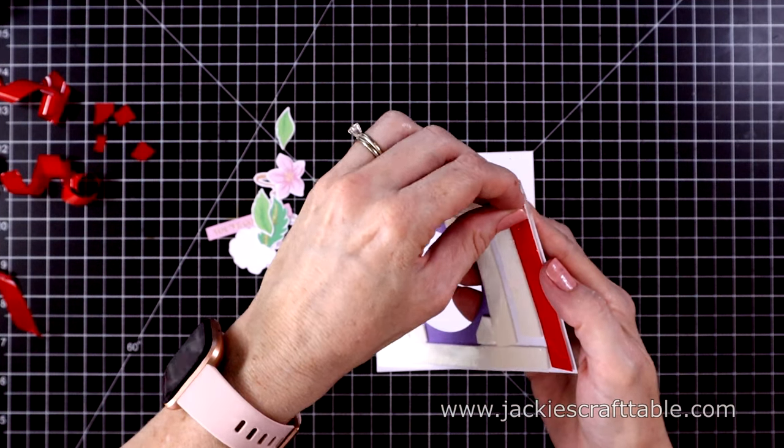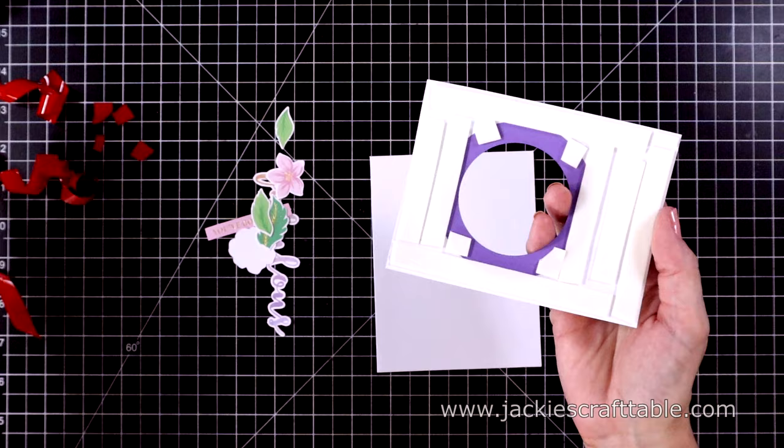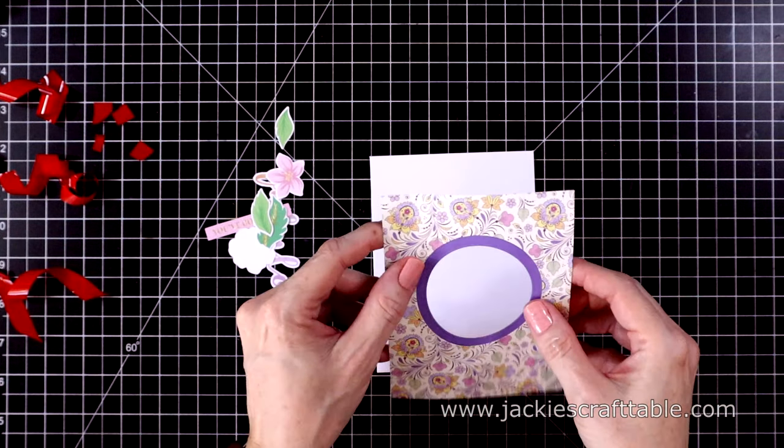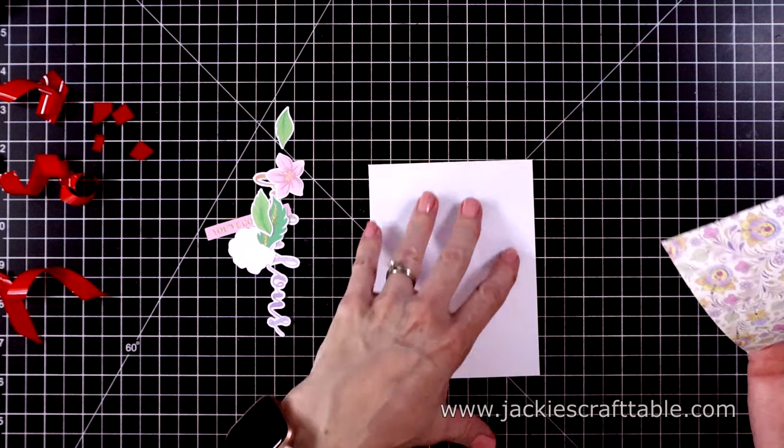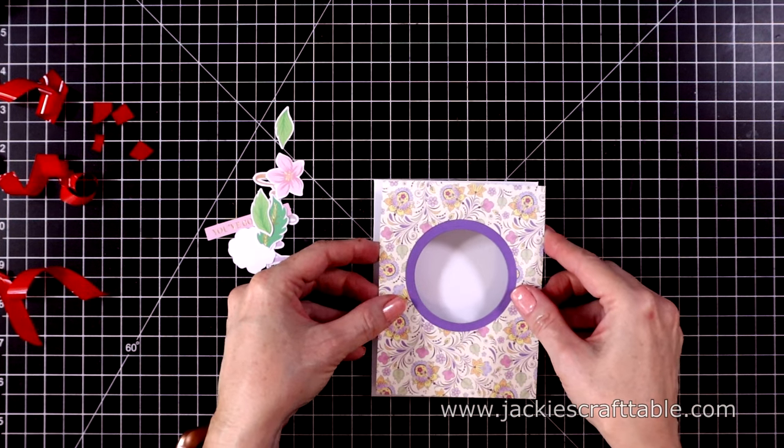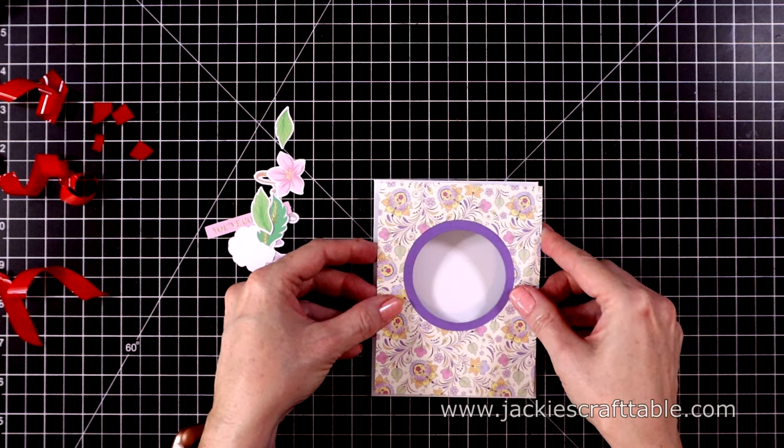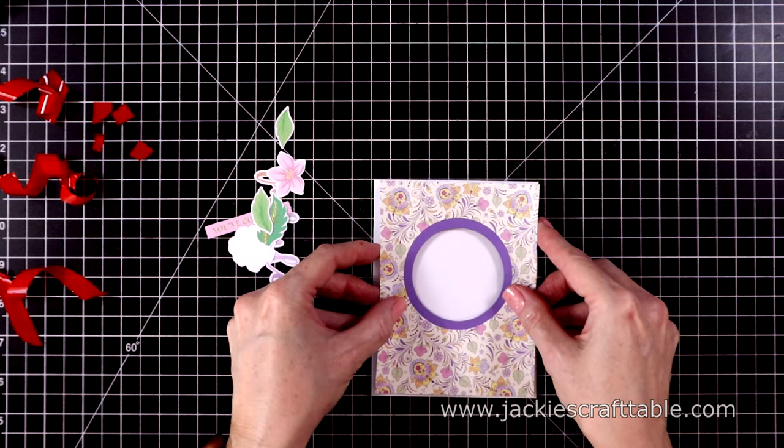I also put down some Arteza foam tape completely covering the cardstock so that it gave it some stability. Otherwise, it's just too thin and it would sag.